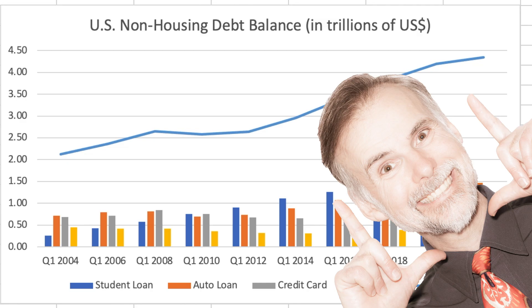Now we've successfully created a combo chart where people can compare the total amount of non-housing debt in the United States with its different components, which in turn will help them make a data-driven decision.